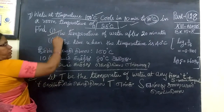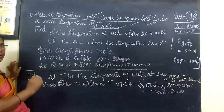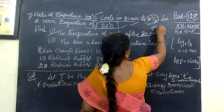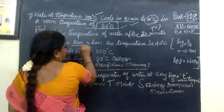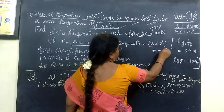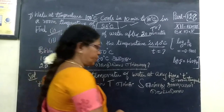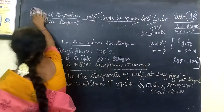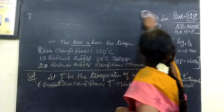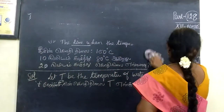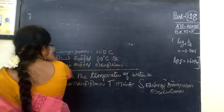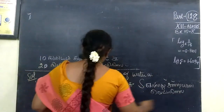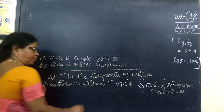There are two questions. First: find the temperature of water after 20 minutes, when it comes to T at 20 minutes. Second: find the time N when the temperature comes to 40 degrees. Let T be the temperature of water at time t, and when t equals 10, T be the temperature of water.